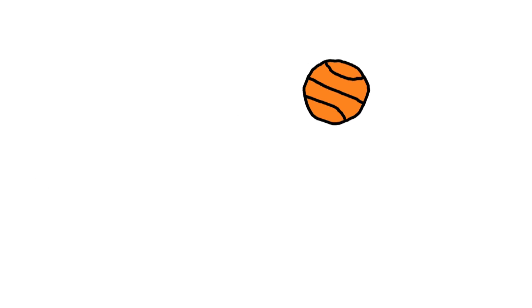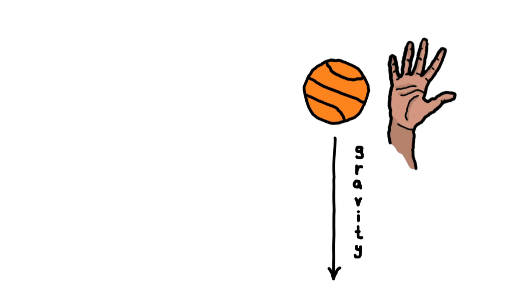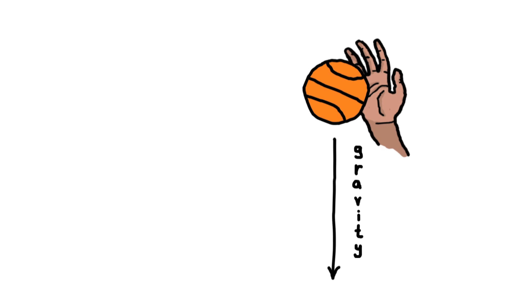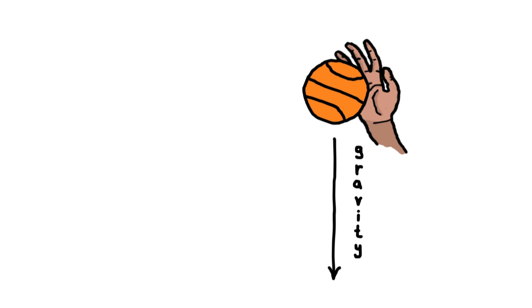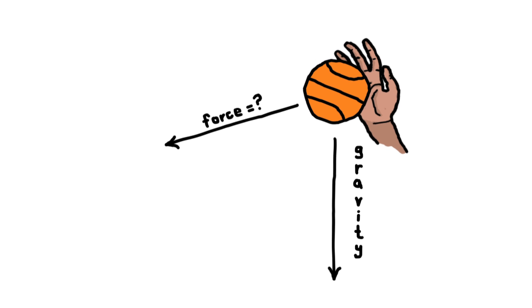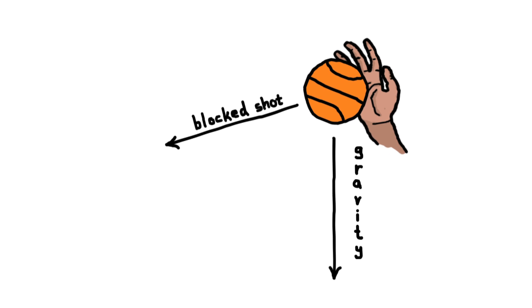Let's begin by discussing the motion of a basketball. When the basketball is flying freely through the air, the only force acting on it is the force of gravity. But with the presence of Anthony Davis' hands, this then adds an additional force to the problem — the force of a block shot.